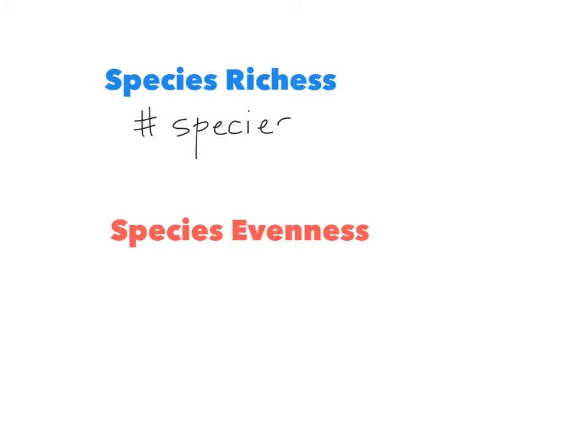Whereas species evenness is the distribution of species. And what I mean by the distribution of species is how evenly they are distributed or spread out based on different factors, such as their size.